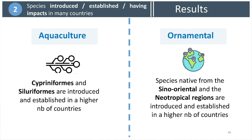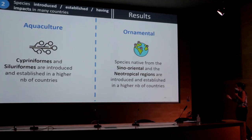Concerning the ornamental pathway, native region seems to be the most important characteristic. Species native from the Sino-Oriental and Neotropical regions are introduced and established in a high number of countries, corresponding to the most popular species in the aquarium trade, which therefore have higher chances to be introduced and established.